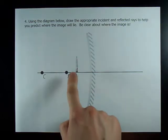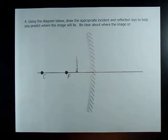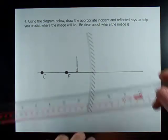The image of a pencil in a concave mirror when the pencil is closer than F. Ray diagram. So you know what the first ray is.